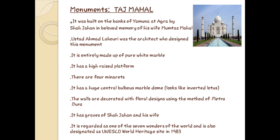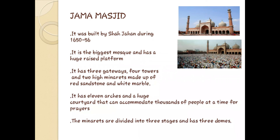Next we have Jama Masjid, one of the largest mosques in India. Its original name is Masjid-e-Jahannuma, and it was commissioned by Emperor Shah Jahan, constructed under the watchful eye of his Prime Minister Saadullah Khan. The construction work took place between 1644 and 1656, and around 5,000 workers were employed. The mosque is located in Agra, directly opposite the Taj Mahal.